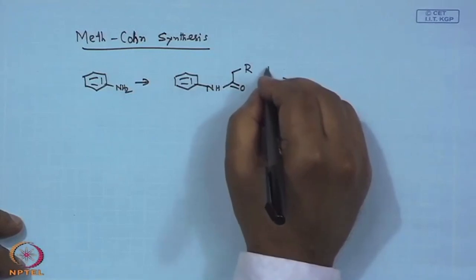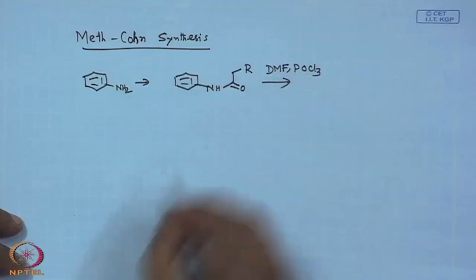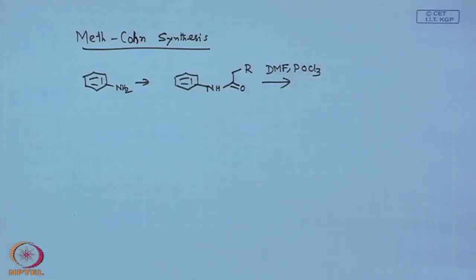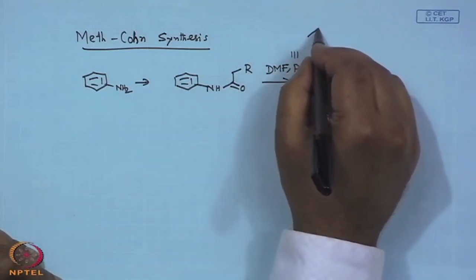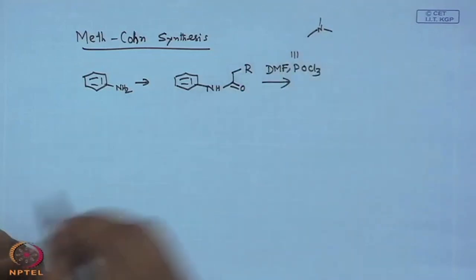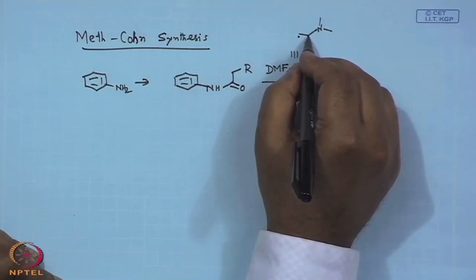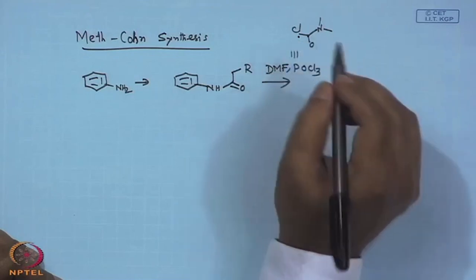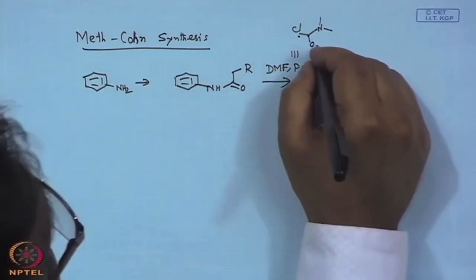Another method based on aniline utilization is the Meth-Cohn synthesis, which builds the quinoline stepwise. First, aniline is acylated with acetic anhydride using standard protocol, and then the Vilsmeier-Haack reagent — DMF with POCl3 — is used for a one-carbon homologation step.